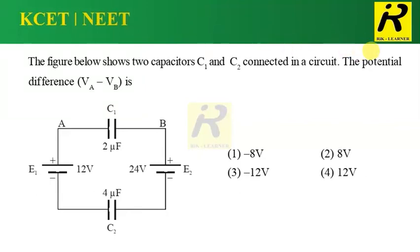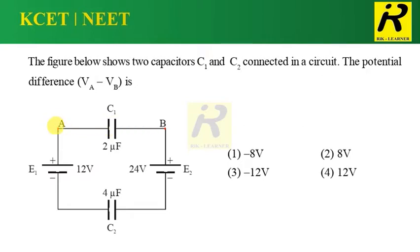Welcome to the channel RAK Learner for KCET NEET. The figure below shows two capacitors C1 and C2 connected in a circuit. We have to find the potential difference VA minus VB — that is, the potential difference between point A and point B, which are the ends of the capacitors. Here we have two batteries and two capacitors.